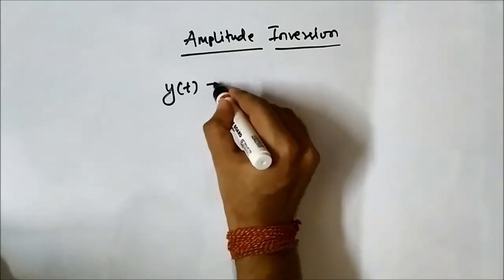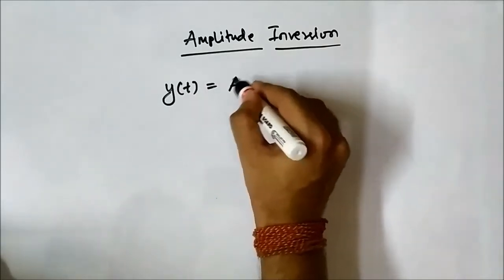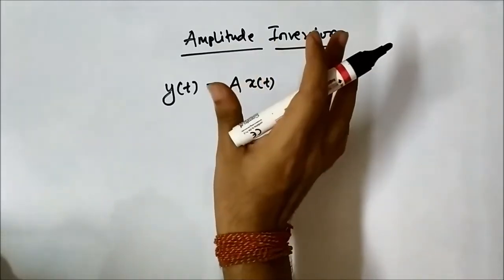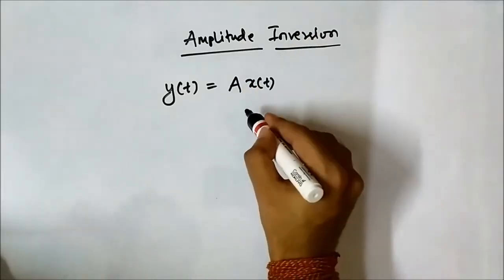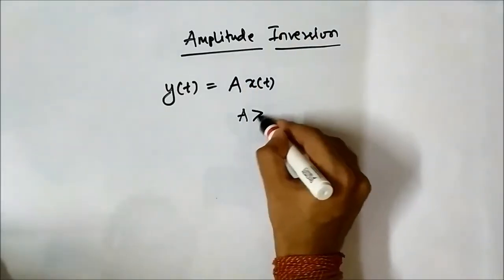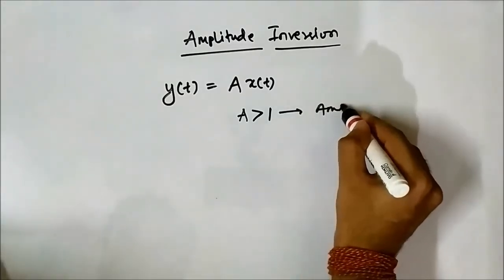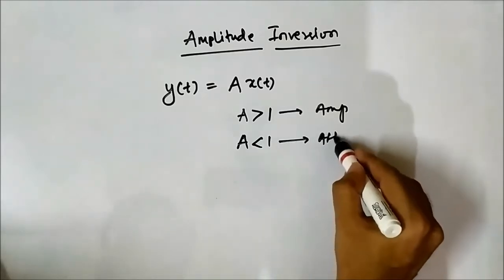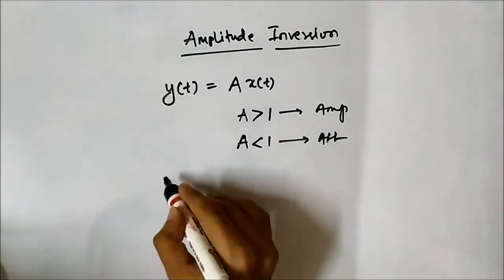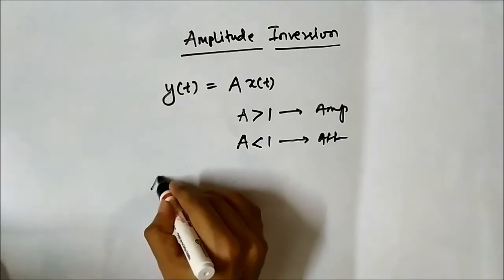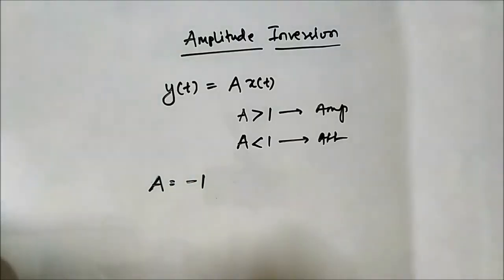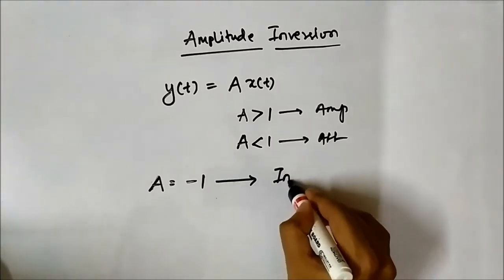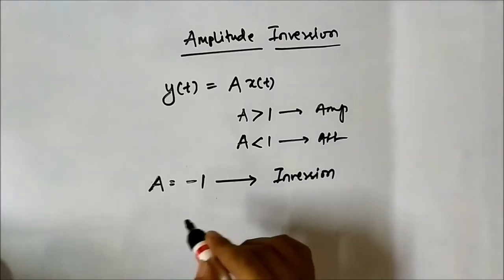We create a new signal y(t) by multiplying the reference signal x(t) with a scaling factor a. When a is greater than 1, amplification happens; when a is less than 1, attenuation happens. When a is equal to minus 1, amplitude inversion happens.